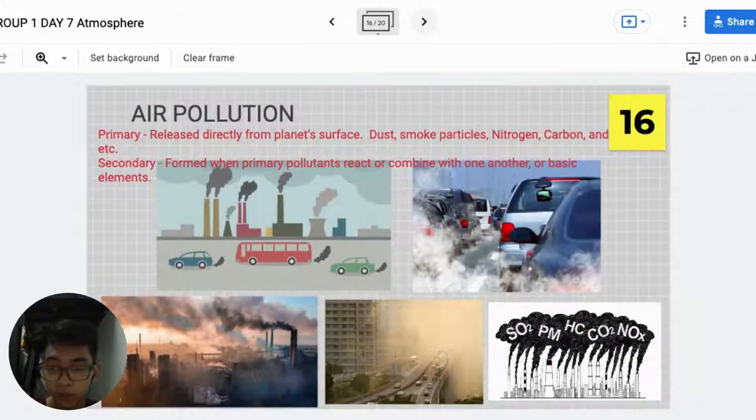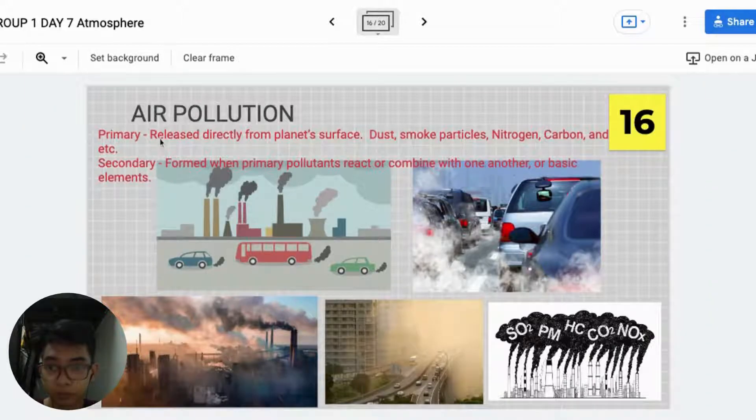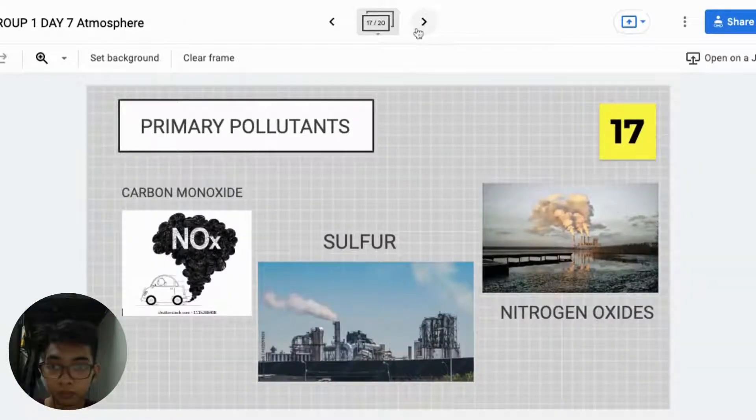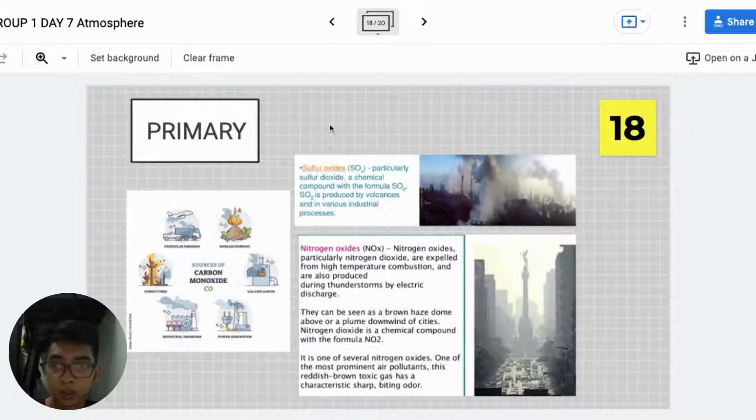Air Pollution. There are two types of air pollution, primary and secondary. Primary pollutants: carbon dioxide, sulfur, and nitrogen oxides.